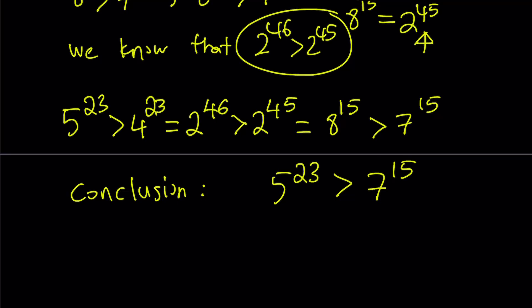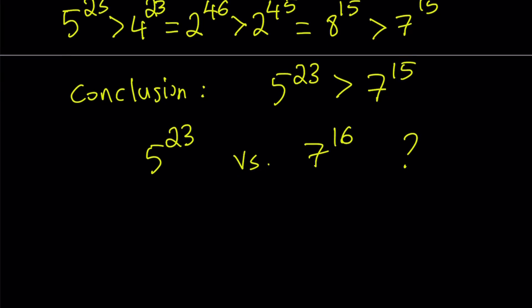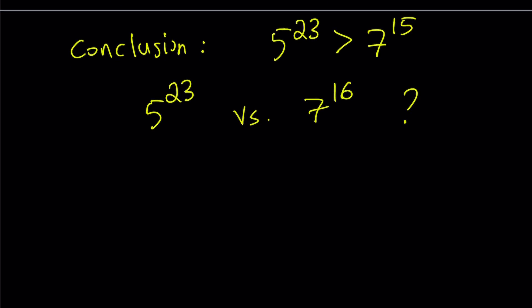But I just want to bring up a question. It's going to be like open-ended. I'm not going to answer it, but I want you to think about it. How about if we had to compare 5 to the power 23 versus 7 to the power 16? Would the inequality still hold or 7 to the power 16 would be larger? Can we find out is there a way to do it? I want to leave it as an open-ended question. And if you give me some ideas, that would be great.